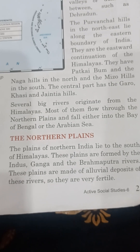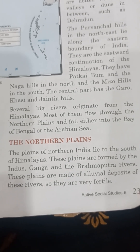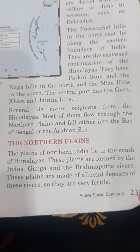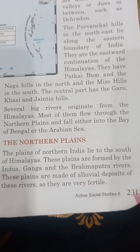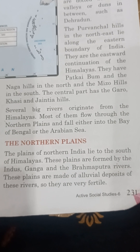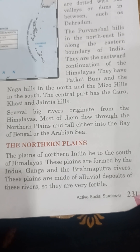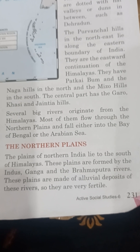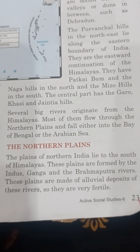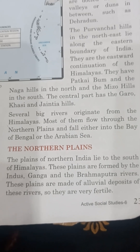Several big rivers originate from the Himalayas. Most of them flow through the northern plains and fall either into the Bay of Bengal or the Arabian Sea through their tributaries.